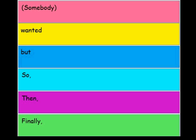The template includes six boxes. Each box begins with a one-word prompt. All of these words are read as a part of the sentences you create with your students, except for the 'somebody,' which is in parentheses in the first box. For this box, students will substitute in the main character's name.